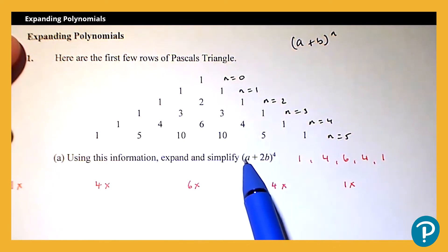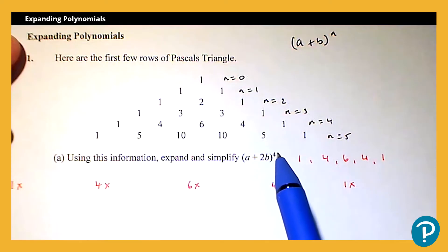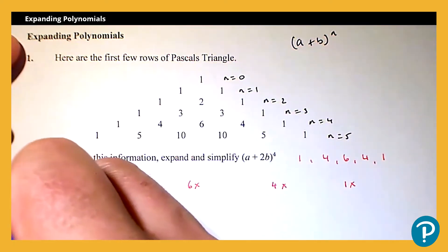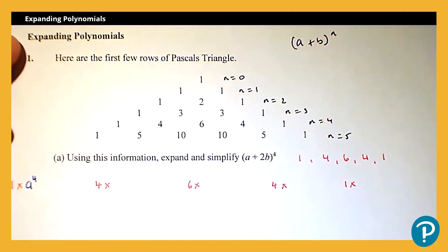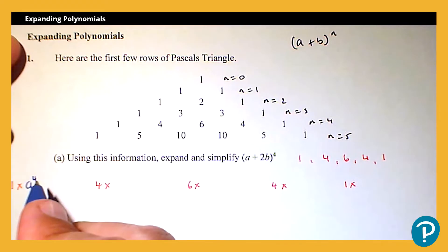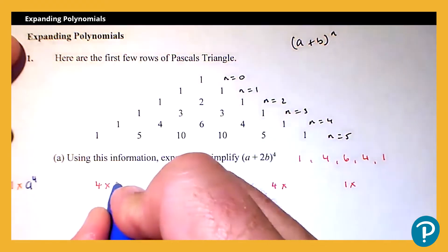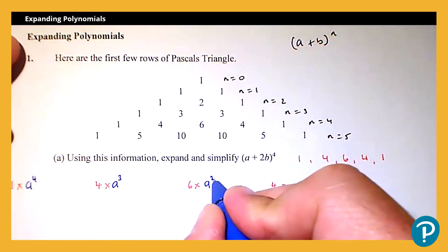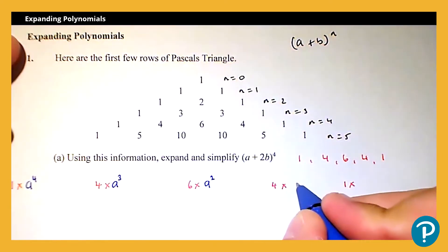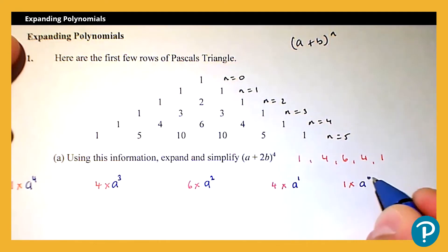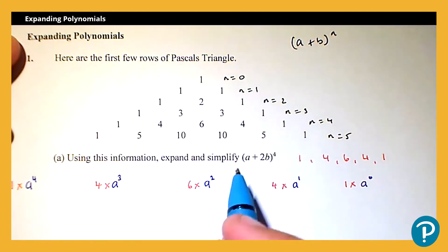The next part comes from the first term in the bracket, which is 'a'. We set the first term initially to the power outside the bracket, so we get a to the power 4. Then as we work along, the index decreases by one each time: a to the power 3, a squared, a to the power 1, and a to the power 0.